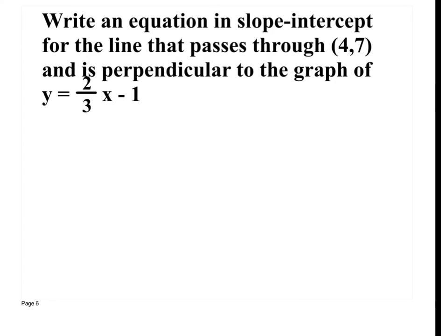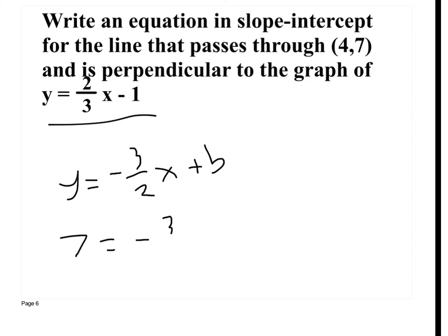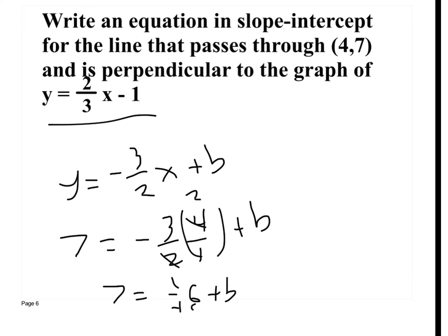We need the equation for a line in slope-intercept form for the line that passes through (4, 7) and is perpendicular to this graph. What would the slope be? Negative 3 over 2 — the negative reciprocal. This one's a little easier because they give it in slope-intercept form instead of standard form. So I plug in 7 for y and 4 for x to find b. That gives me 7 equals negative 6 plus b, so b equals 13. My equation is y equals negative 3 over 2 x plus 13.